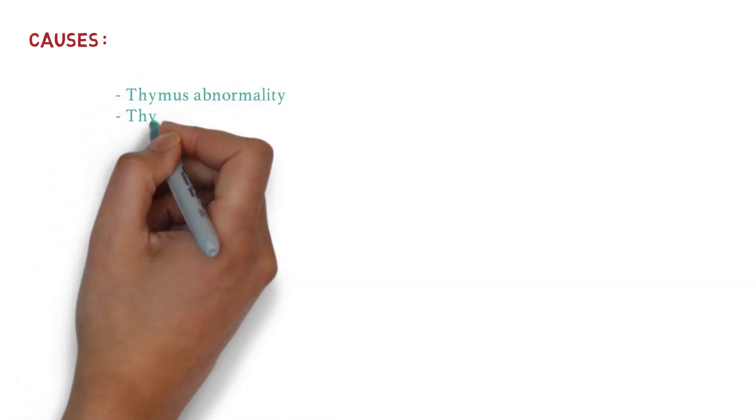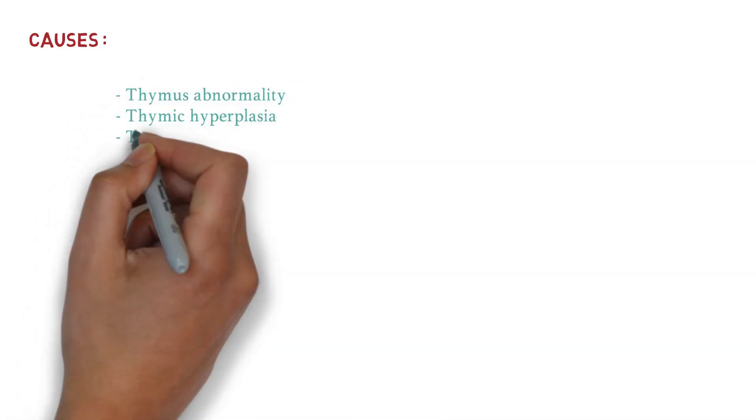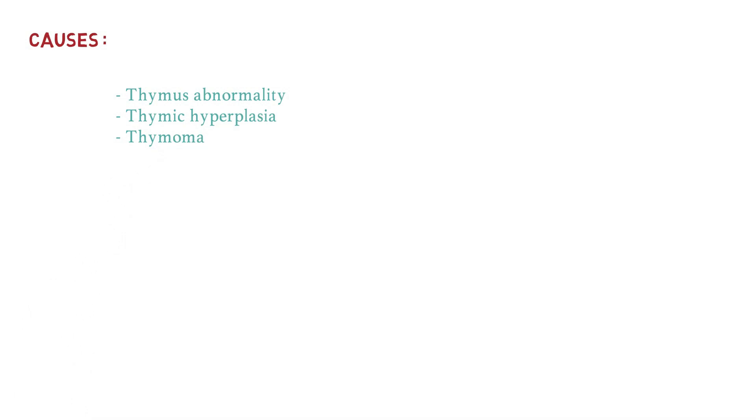Now, what are the causes which cause Myasthenia Gravis? There are three important factors: thymus abnormality, thymic hyperplasia, and thymoma. About 75% of Myasthenia Gravis is due to thymus abnormality.